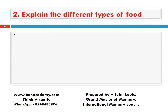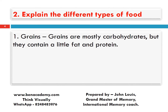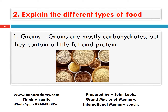What are grains? Grains are mostly carbohydrates but they contain a little fat and protein. So grains are mostly carbohydrates but contain a little fat and protein. Carbohydrate is in large quantity, while fat and protein are in small quantity.